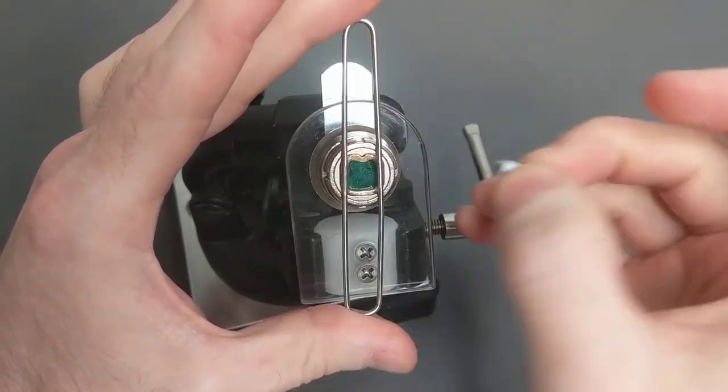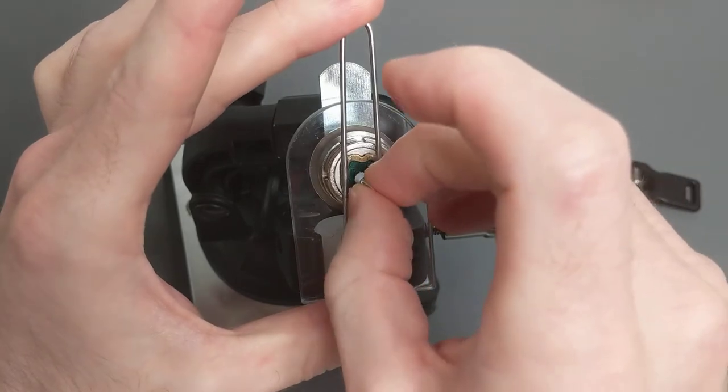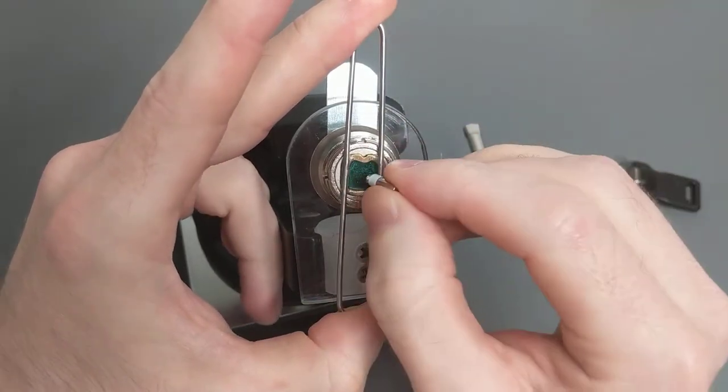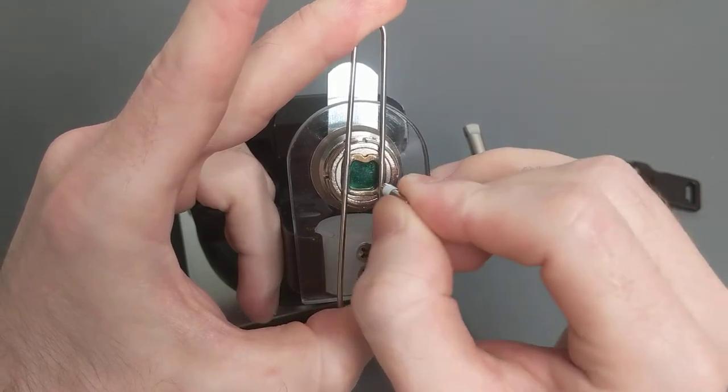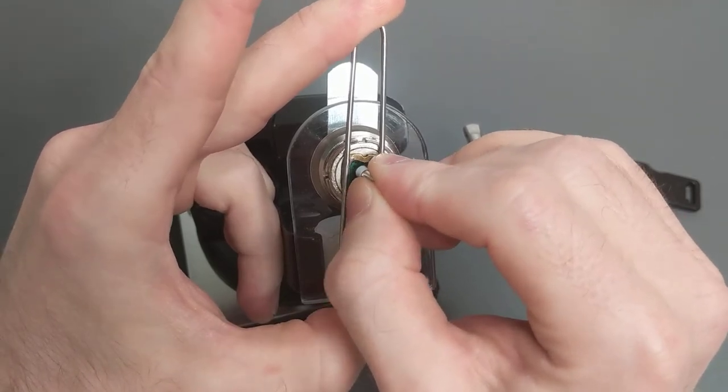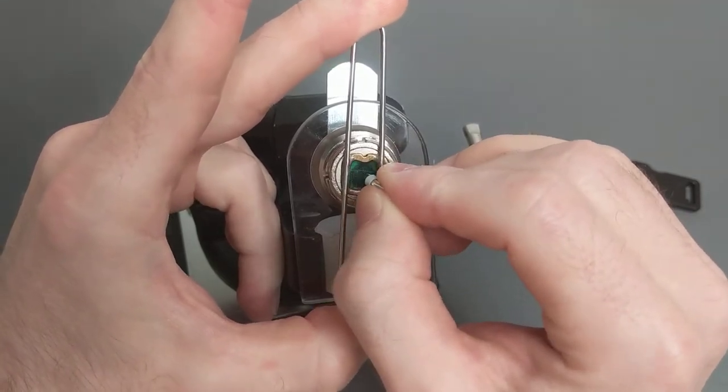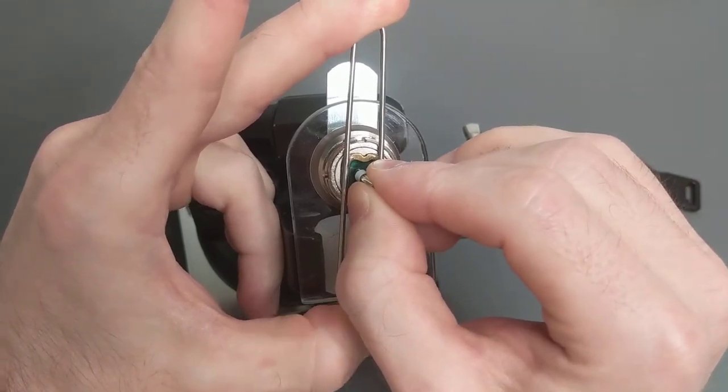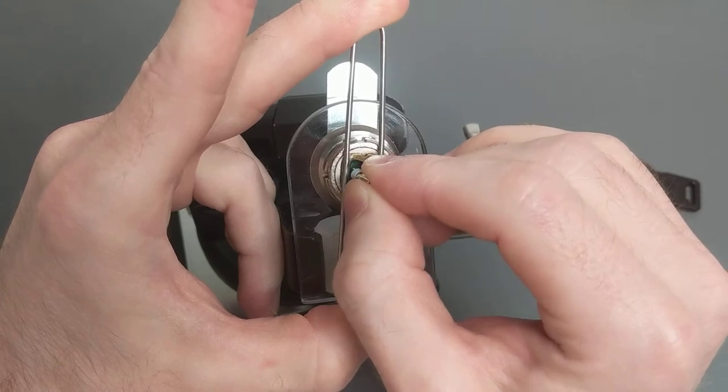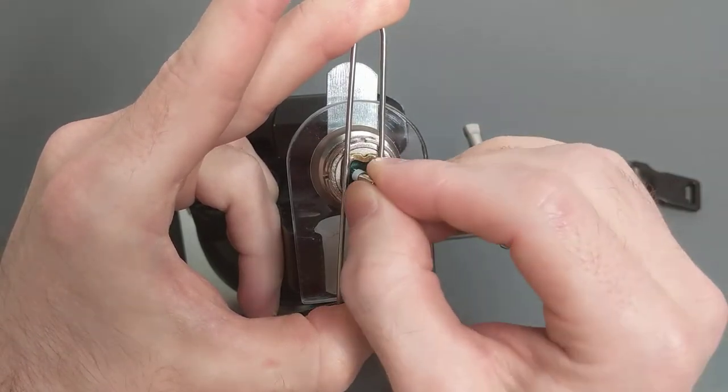So the rotors scramble pretty freely, and you can apply tension, and then look for binders, and listen for that true gate. So there's the rattle. The true gate there.